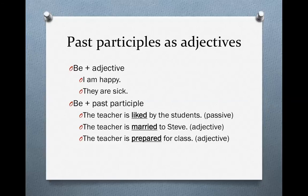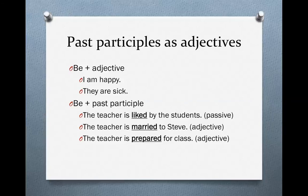Let's look at the next example: "The teacher is prepared for class." We have a form of the verb be plus a past participle. Prepared is the past participle of the verb prepare, but there's no passive meaning here. The teacher is the subject and the teacher does the preparing — the teacher is active. Prepared is just an adjective. You could say: the teacher is happy, beautiful, smart, kind, prepared. Prepared is an adjective — it looks like a past participle, but it's an adjective.